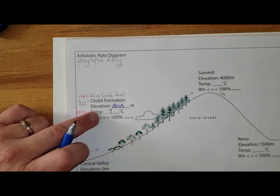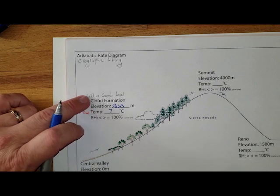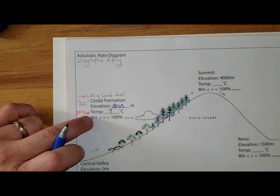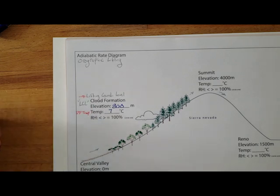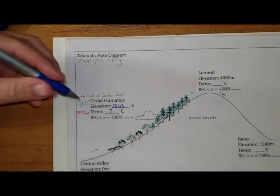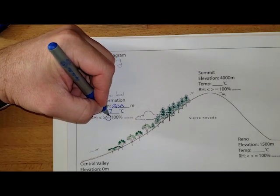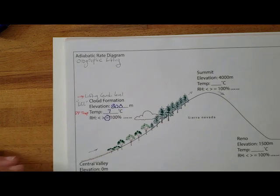Now, if the dew point temperature is the same as the regular temperature and we're at the lifting condensation level, there's something else that we know about our relative humidity. The thing that we know about the relative humidity is that guy is equal to 100%. Yay!